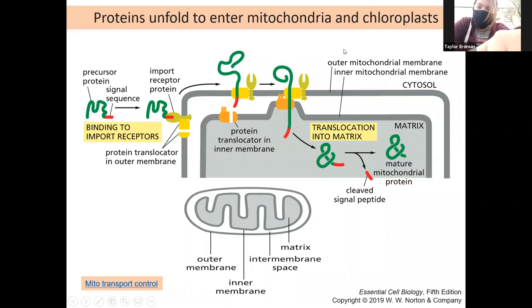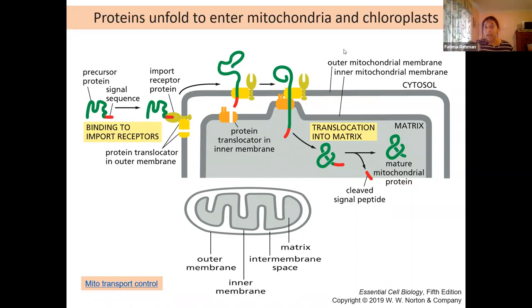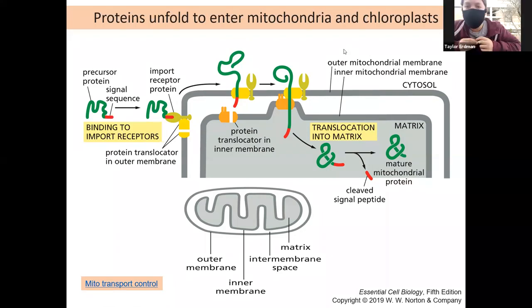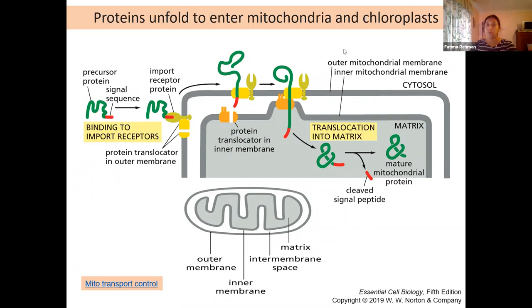A student asks about the import receptor protein's main goal. It recognizes the signal sequence — the other proteins don't have a way to recognize the signal sequence as such. So it recognizes the signal sequence and moves it into the translocator. That's its total goal. The translocators are just threading the protein through and moving it in.